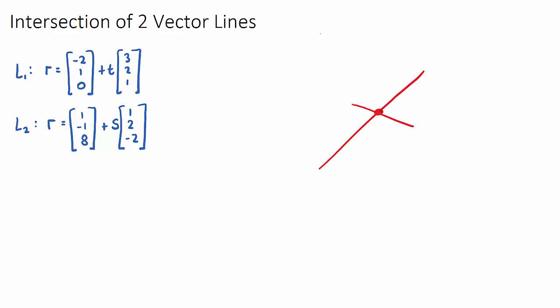When they're equal to each other, the x values of the lines, the y values, and the z values will be equal to each other. So what we need to do is look at our parametric equations—that's just a fancy word for the x equation, the y equation, and the z equation for each of the two vectors, and make them equal to each other.